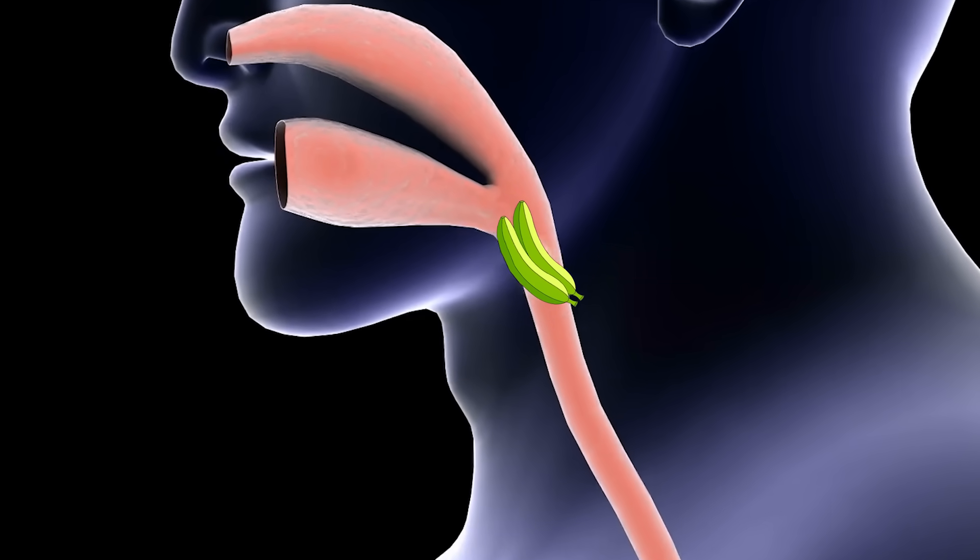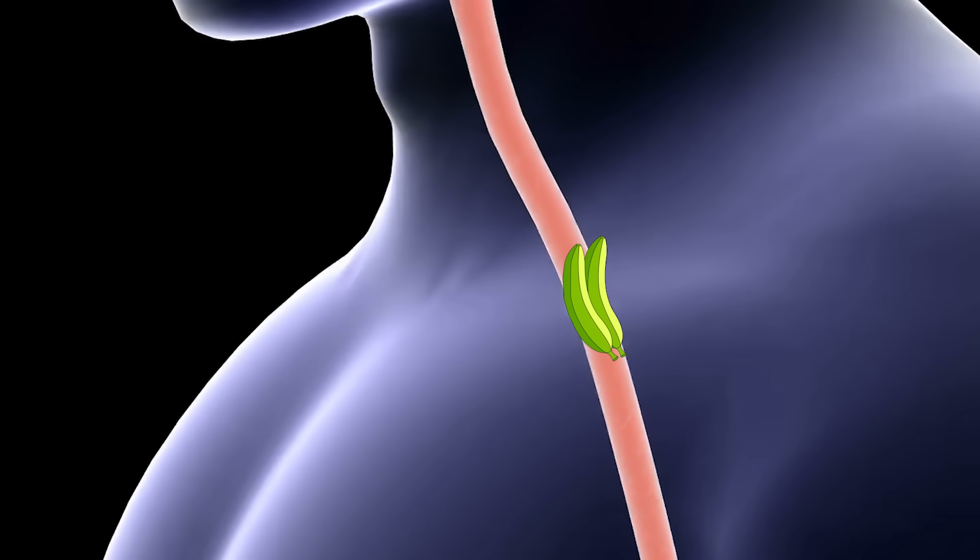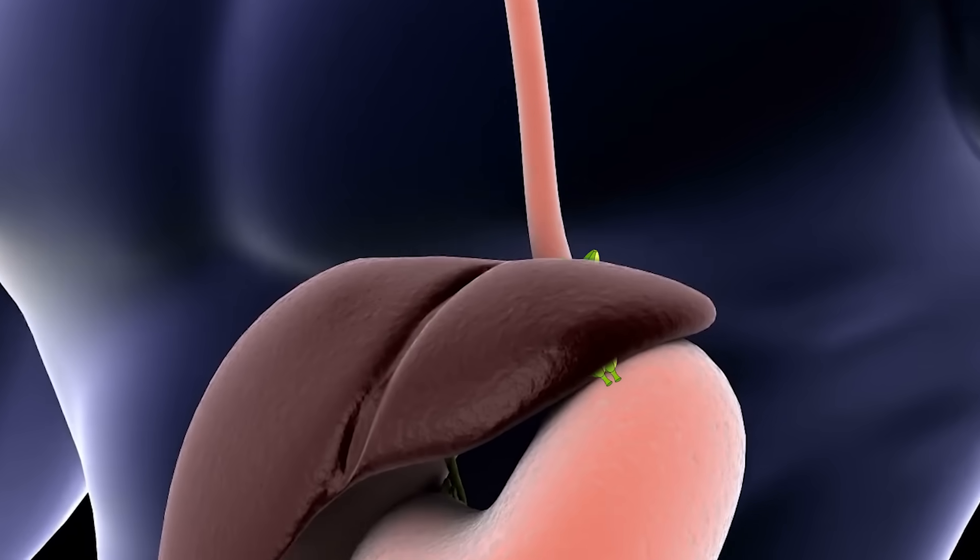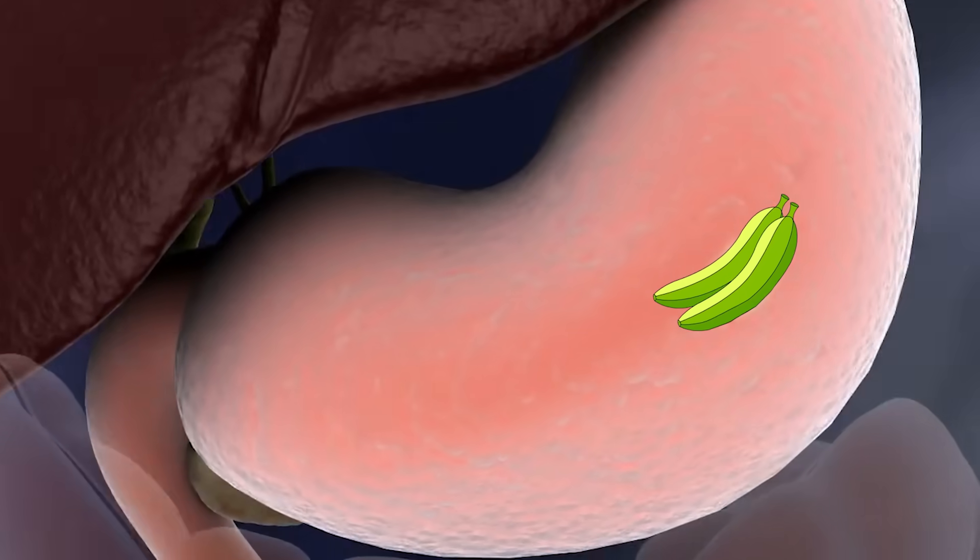A resistant starch is a starch that's resistant to digestion through multiple different avenues, but it's resistant in the small intestine. It doesn't break down in the small intestine, but it continues on to the large intestine where it can get fed on by bacteria, and you never actually absorb the carbohydrates from it, or you do in very small amounts.